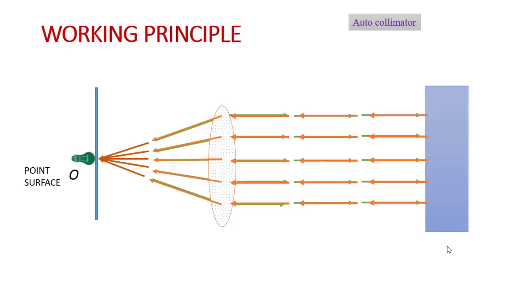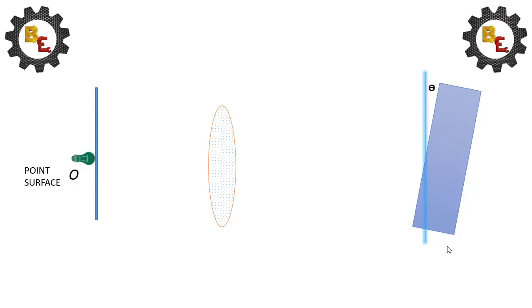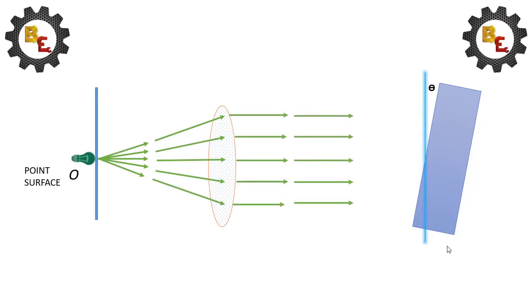Suppose the object is tilted some angle. The light rays will be passed from the point of source O and collimating lens provides the parallel pencil line. Then, this light rays will be passed on the reflector plane and the light rays projected perpendicular to the reflector surface.